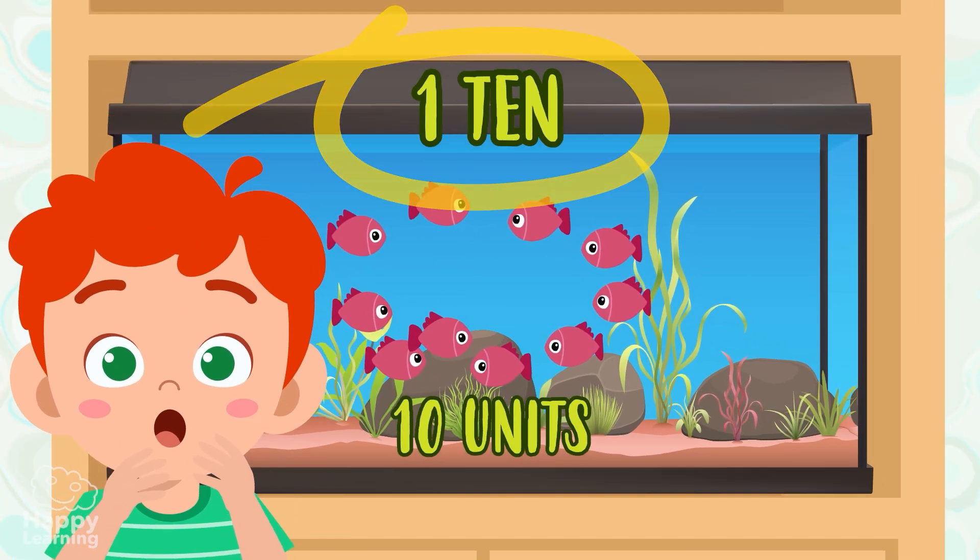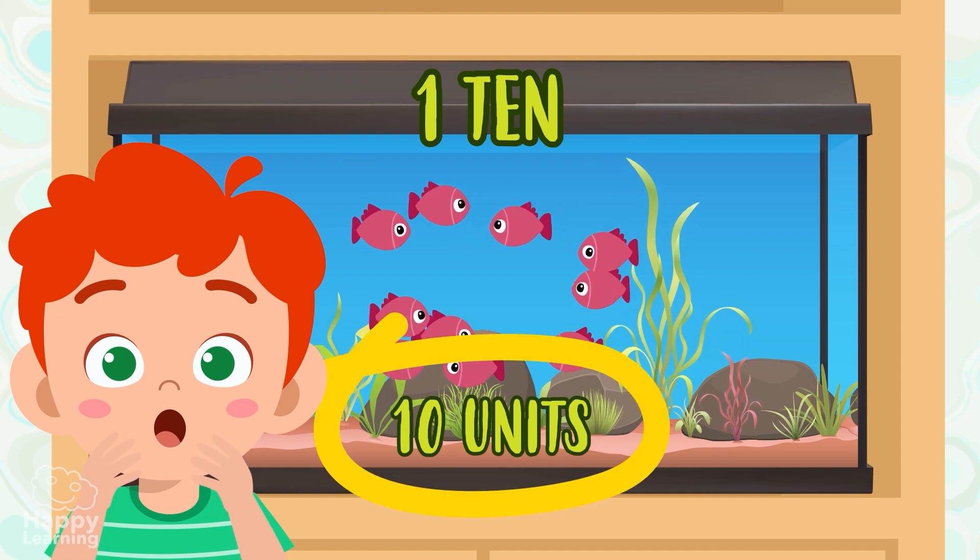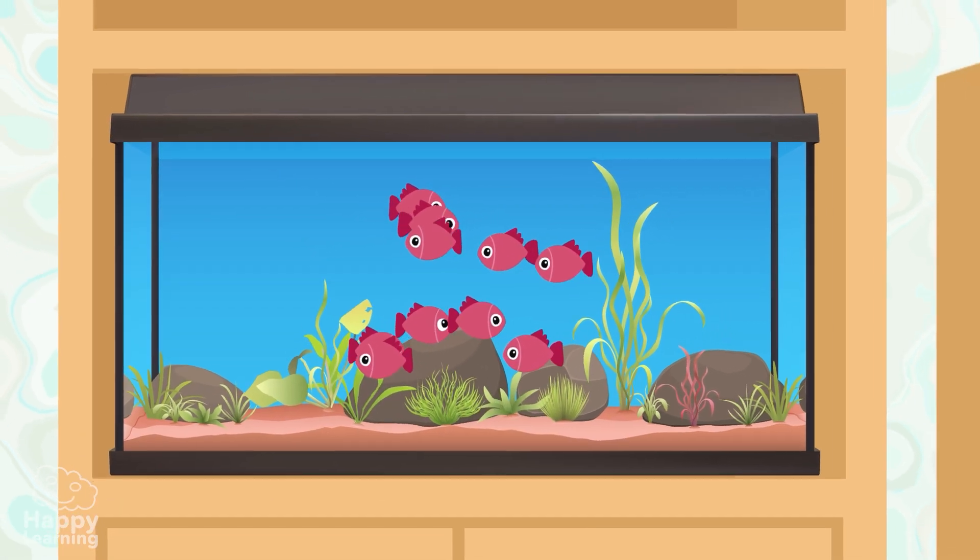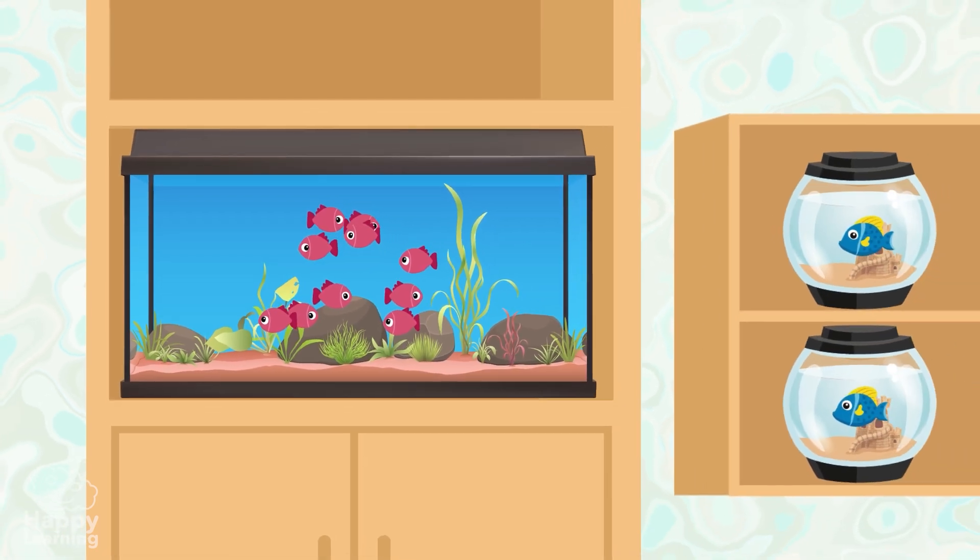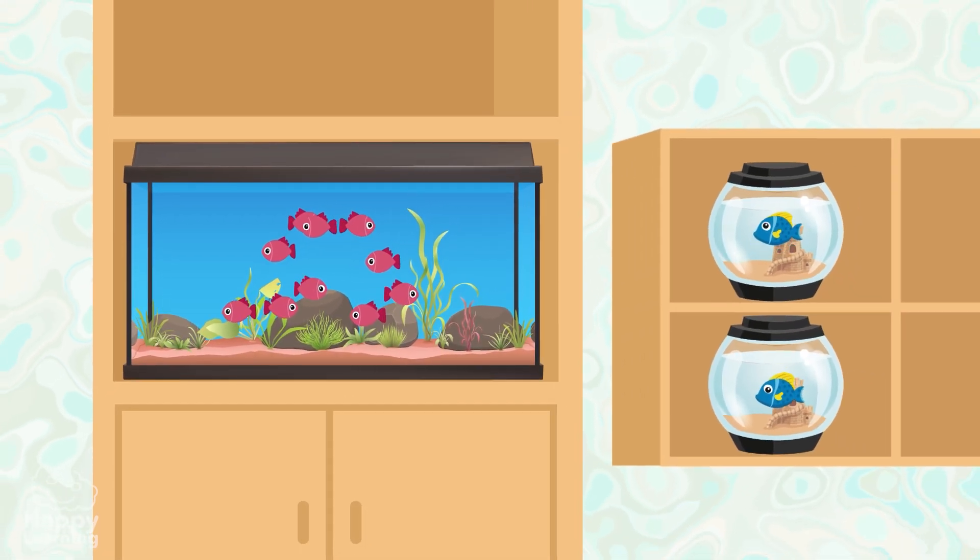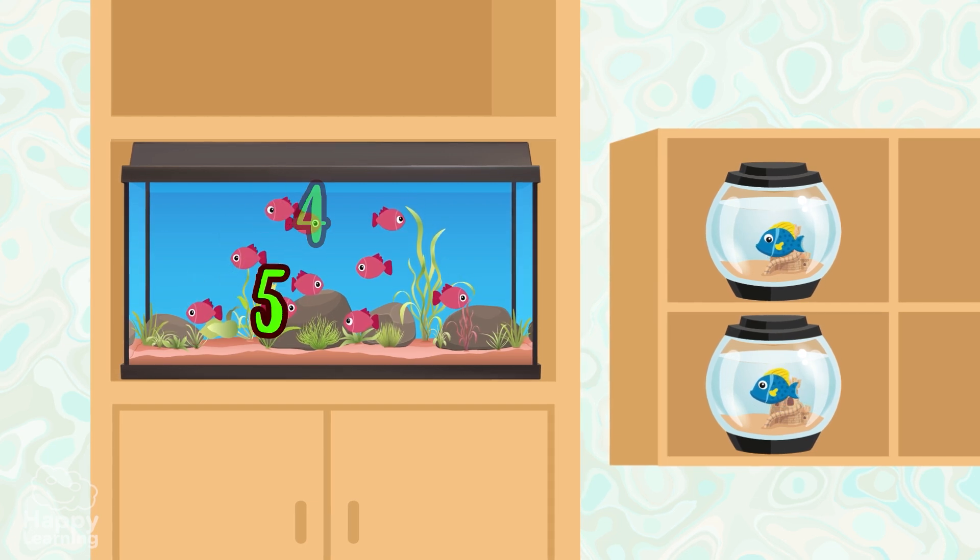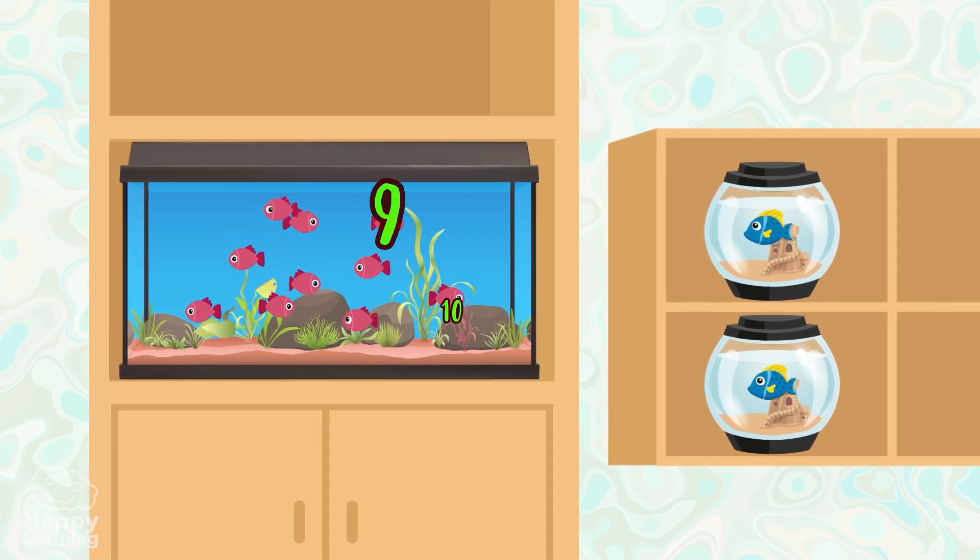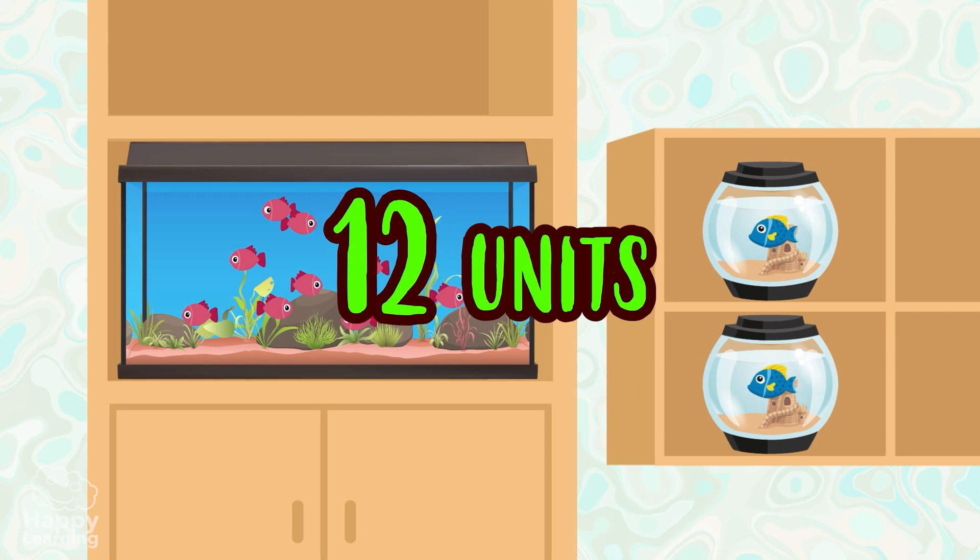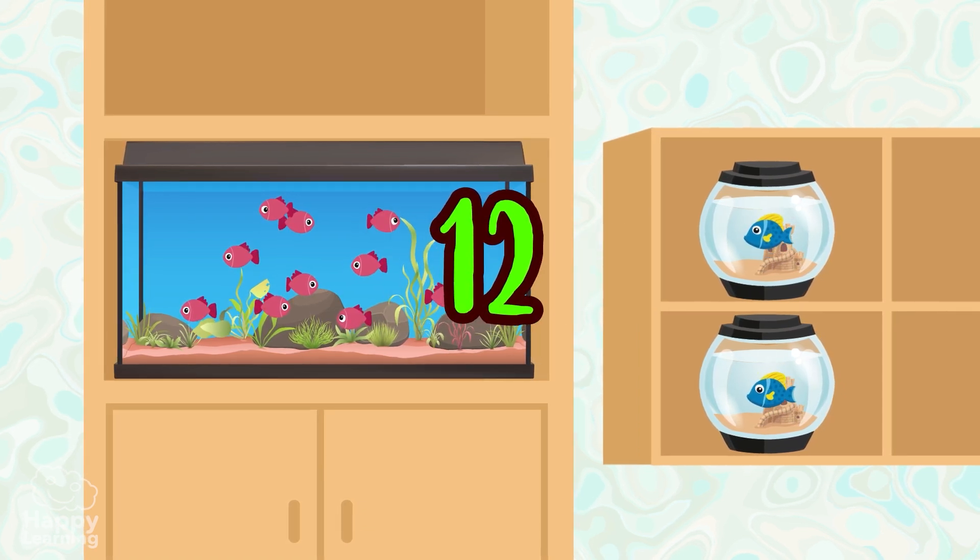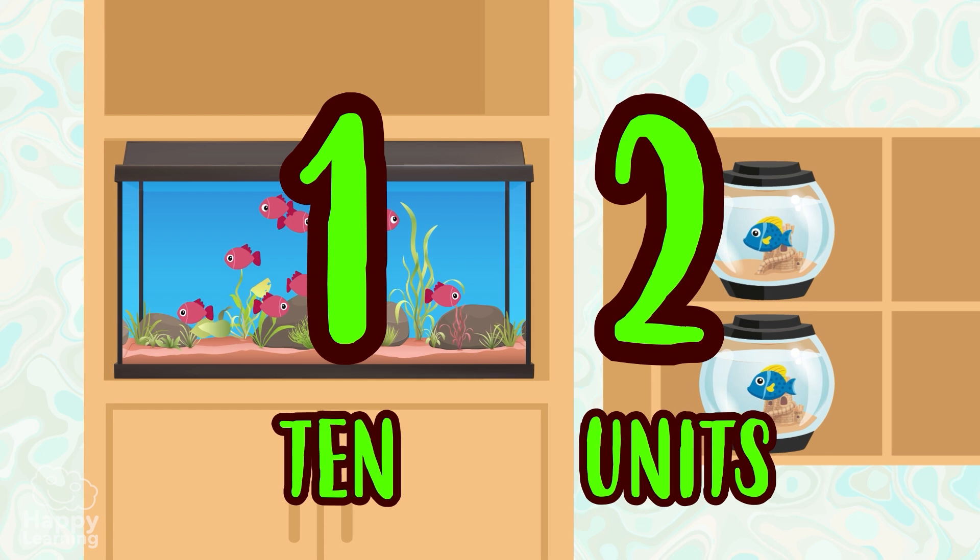Remember, a ten is a grouping of ten units. Let's leave our fish tank here. Because here come two more fish. If we count them all now, we'll have twelve units! Twelve fish! Or, in other words, a ten and an additional two units.